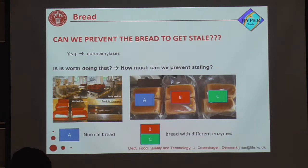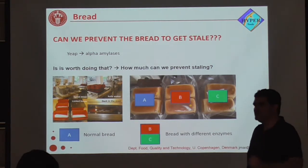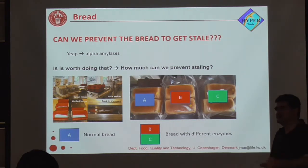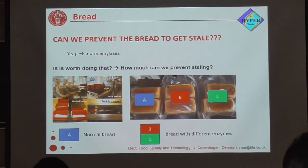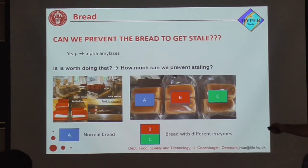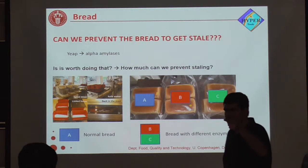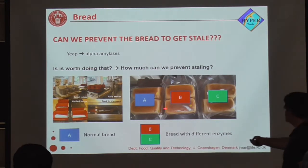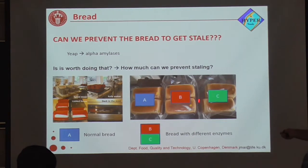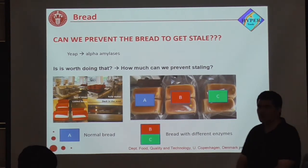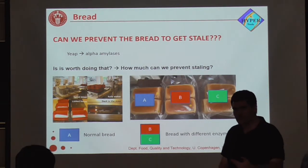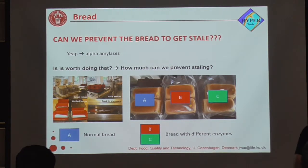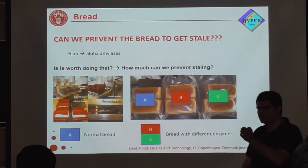They asked us: could we check whether a new formulation of protein works better than the old one? So we planned a full design of experiments with three breads. This is normal bread — basically flour, water, and yeast. This is bread with one type of enzyme, and this is another bread with a different type of enzyme. We baked bread with these three recipes and checked what the behavior of the surface was over time.